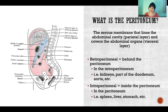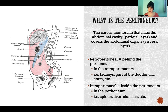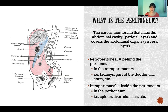The serous membranes in our other cavities have their own special names depending on what cavities and organs are contained within them. Retroperitoneal and intraperitoneal describe the location of organs relative to where the peritoneum is. Intraperitoneal simply means inside of the peritoneum, which includes organs like the spleen, liver, stomach, and several more — mostly digestive organs and a couple others like the spleen.